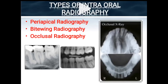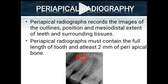There are three types of intraoral radiography: periapical, bitewing, and occlusal radiography. Periapical radiography records the outlines, position, and mesiodistal extension of teeth and surrounding tissues. Periapical radiographs must contain the full length of the tooth and at least 2 mm of periapical bone to fully detail any lesion located at the apex.